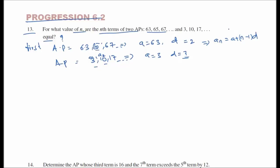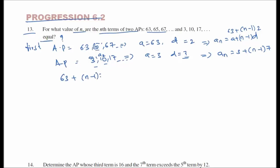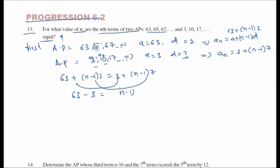For the first AP: a_n equals 63 plus (n minus 1) times 2. For the second AP: a_n equals 3 plus (n minus 1) times 7. Setting them equal: 63 plus (n minus 1) times 2 equals 3 plus (n minus 1) times 7. Rearranging: 63 minus 3 equals (n minus 1) times 7 minus (n minus 1) times 2.